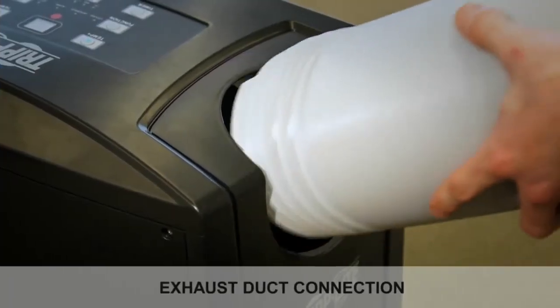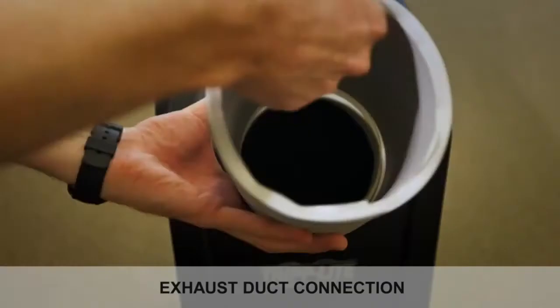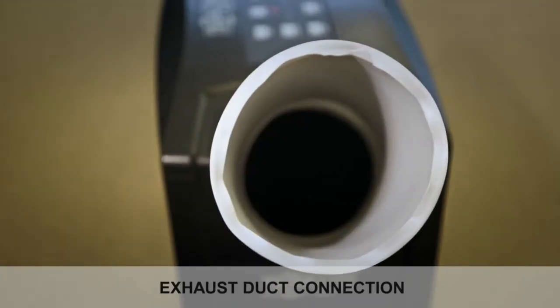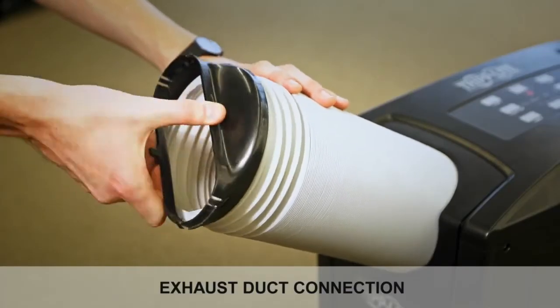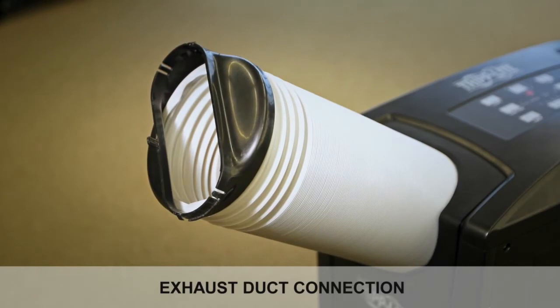To connect the exhaust duct, press the duct firmly into the exhaust opening and turn it clockwise until it connects firmly to the unit. Connect the exhaust adapter to the other end of the duct the same way. Press the adapter firmly onto the duct and turn the adapter clockwise until it is firmly connected to the duct.